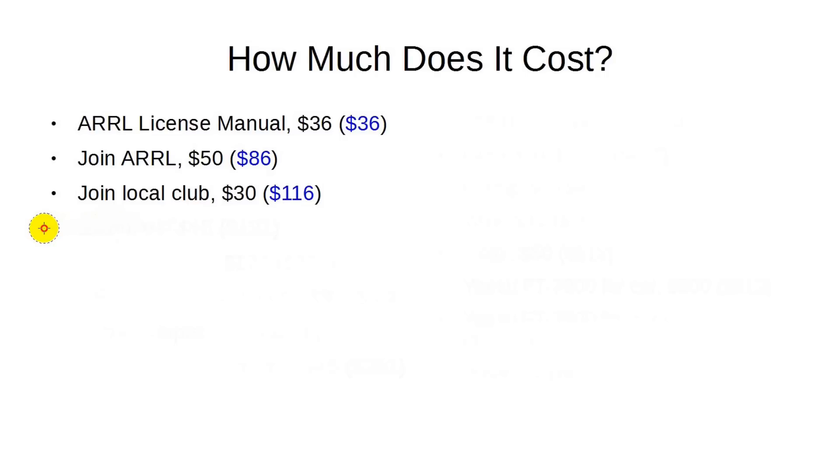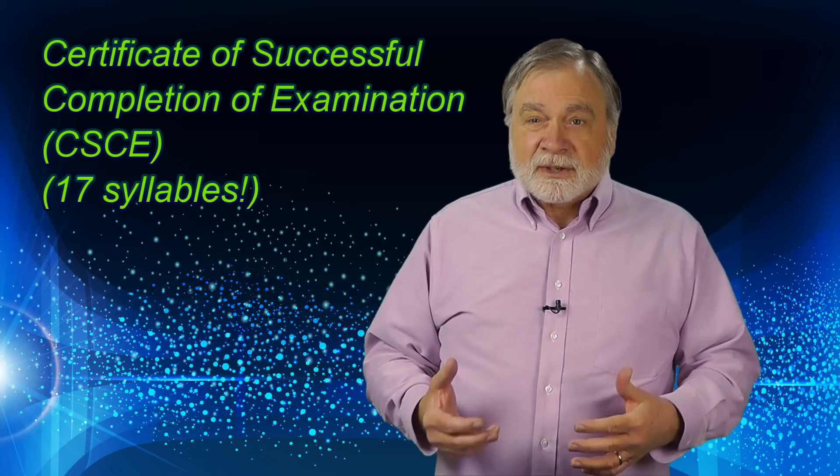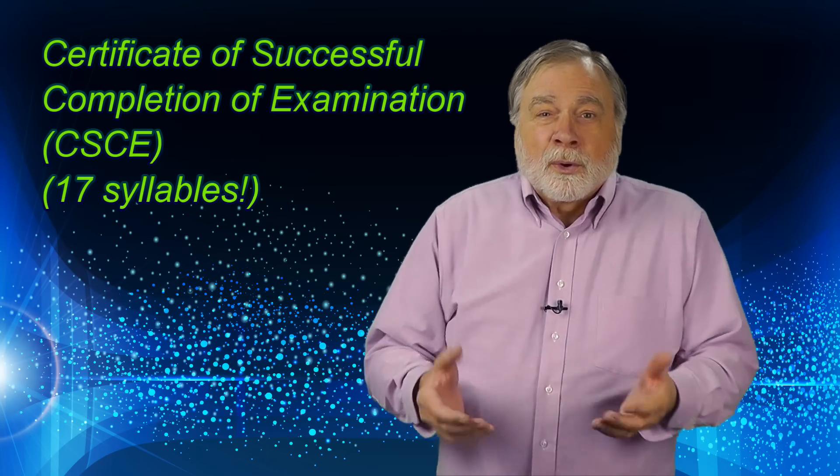The next step, of course, is the exam itself. You'll need to pay the fee to the volunteer examiners. That's running about $15 these days, give or take. So now we're up to $131. You'll know you passed the exam within minutes. The examiners will grade your test and give you a Certificate of Successful Completion of Examination, a bit of government speak if there ever were one. Now you can go get that equipment and you can get on the air as soon as you see your call sign show up on the FCC database.